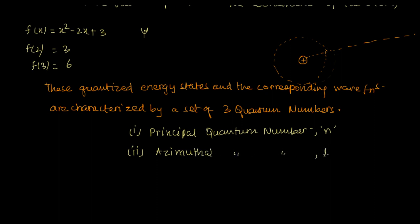And the third quantum number that comes into play is the magnetic quantum number, denoted by M.